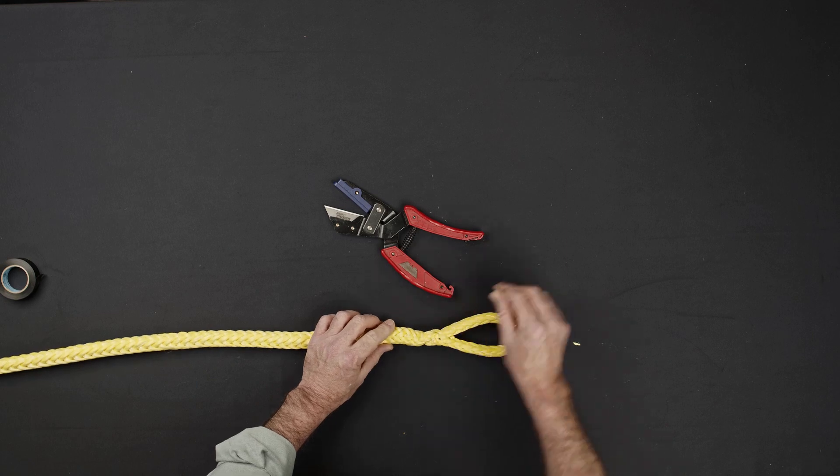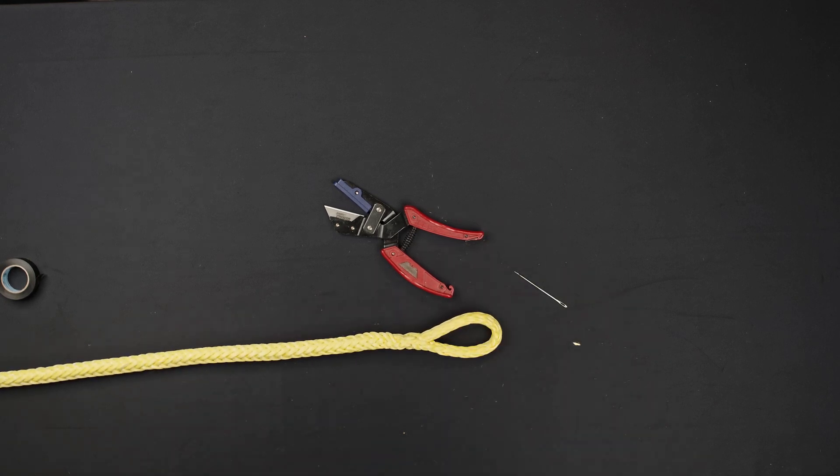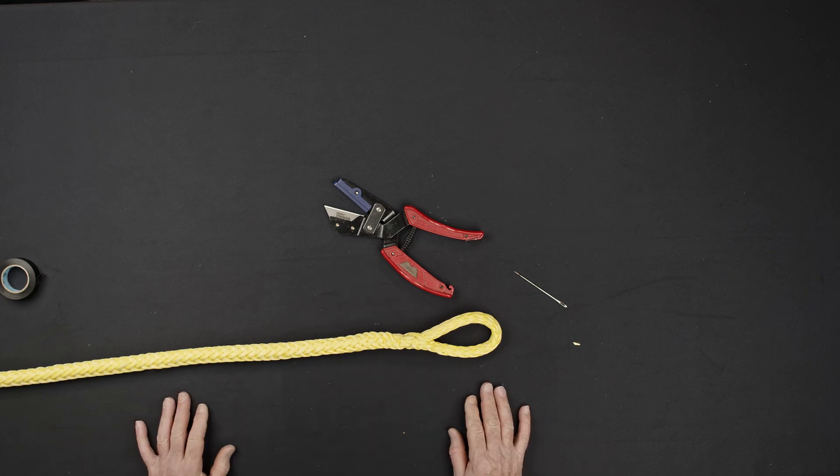This splice should be finished with a whip lock or box stitch to prevent the tail from pulling out of the splice under no load. Refer to the whip lock instructions at the end of the industrial single braid eye splice video.